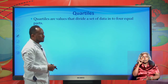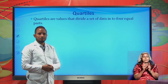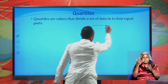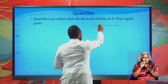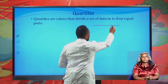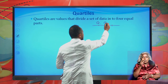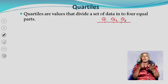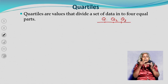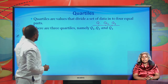Quartiles are values that divide a set of data into four equal parts. For example, if you have a certain set of data, quartiles divide this data into four equal parts. We have three quartiles: quartile one, quartile two, and quartile three.